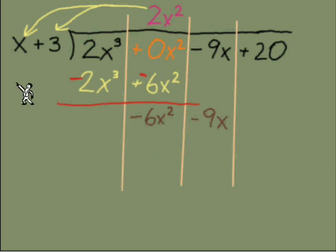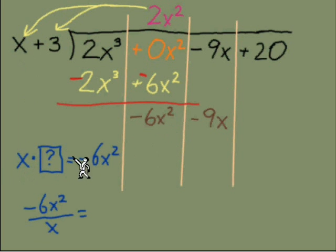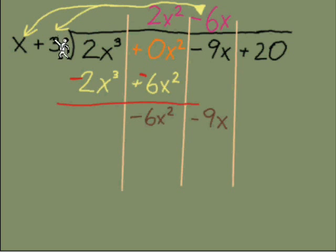We're ready to start round 2. We're thinking about this x and this negative 6x². Is it x times what equals negative 6x², or with division negative 6x² over x? One of these ways hopefully you're settling on as the way you like to get you to see it's a negative 6x. That's the next term of our answer.